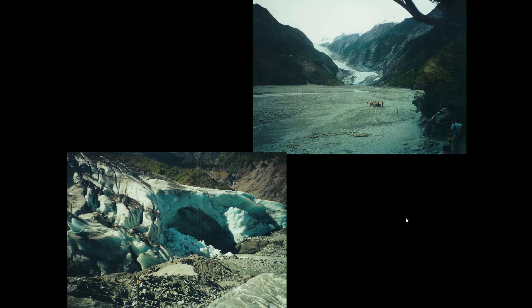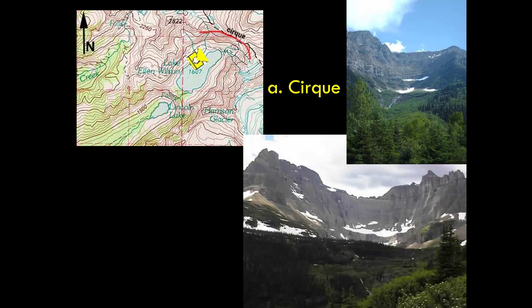There are a tremendous number of features associated with glacial erosion. The first is called a cirque. A cirque is a semi-circular, bowl-shaped or amphitheater-shaped erosional feature that marks where there used to be the head of a glacier — the beginning of a glacier — similarly to how a river has a head or beginning.